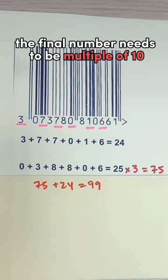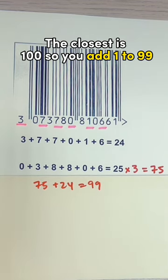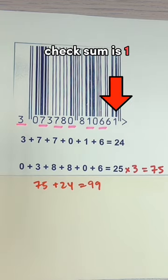The final number needs to be a multiple of 10. In this case, the closest is 100. So you add 1 to 99, hence the checksum is 1.